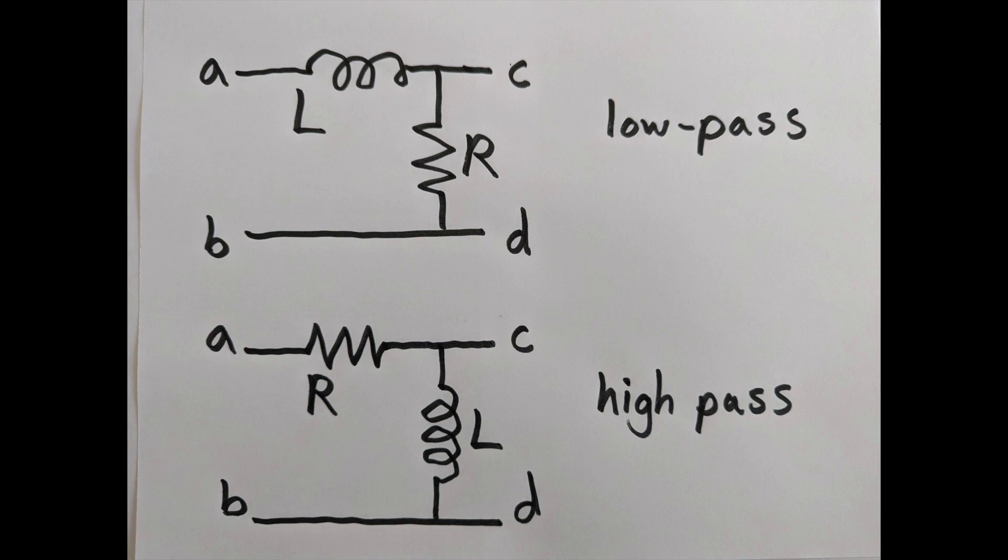Now, since inductors have opposite behavior to capacitors, it probably doesn't surprise you that if the inductor is high, it's a low-pass filter, and if the inductor is low, it's a high-pass filter. So that's four filter networks so far.